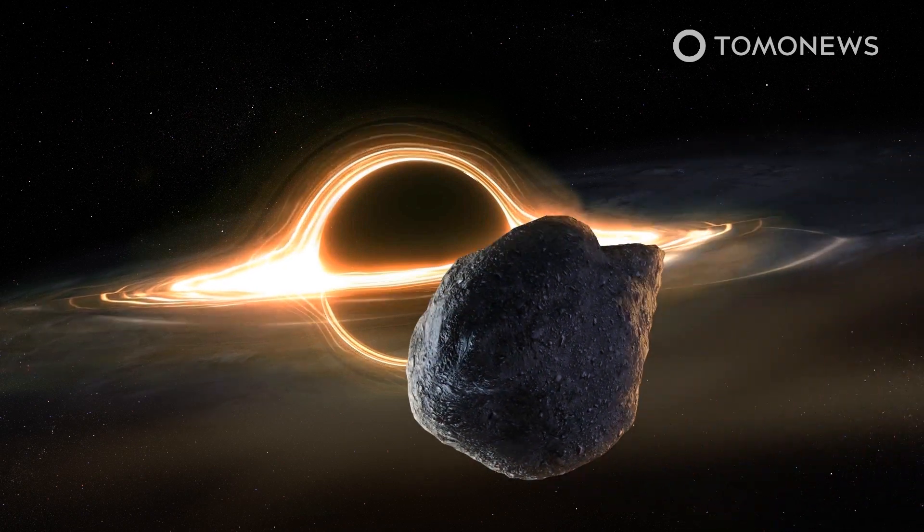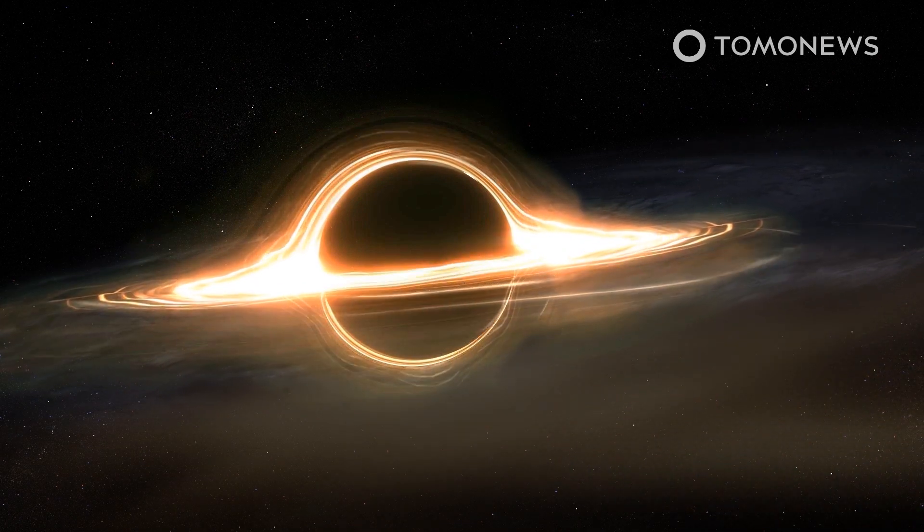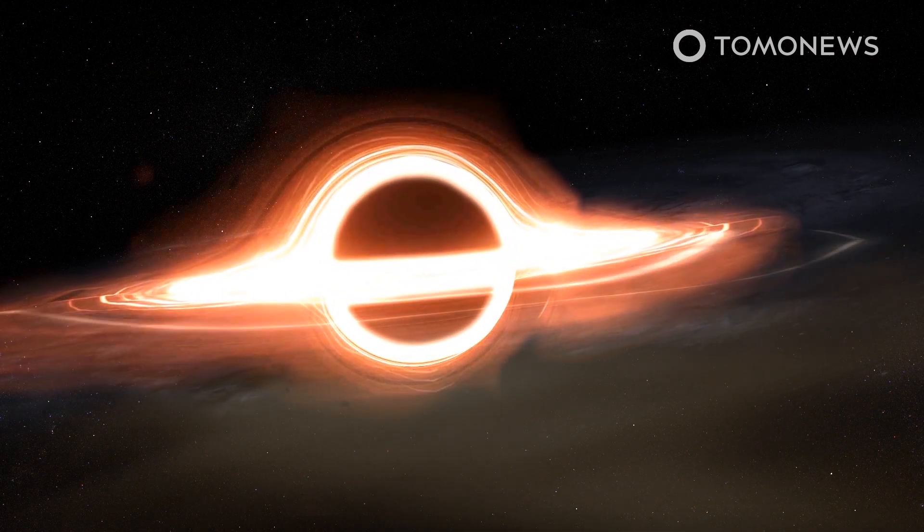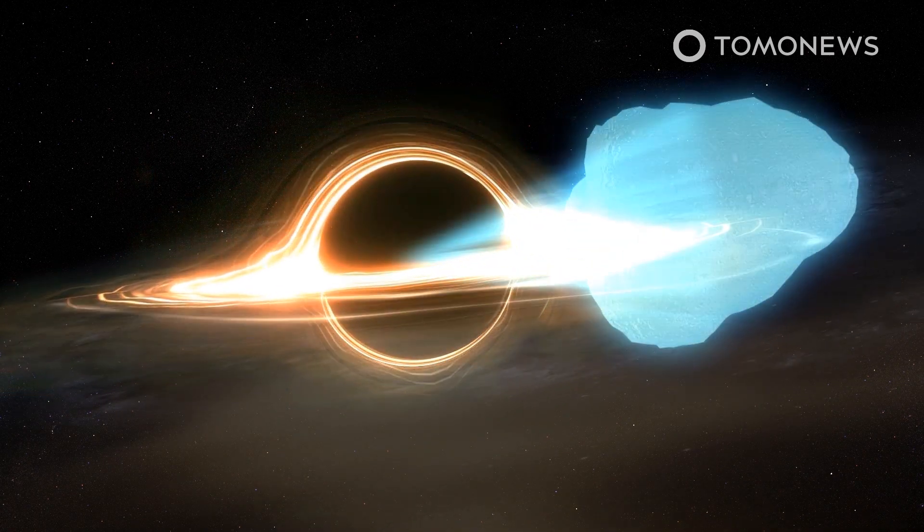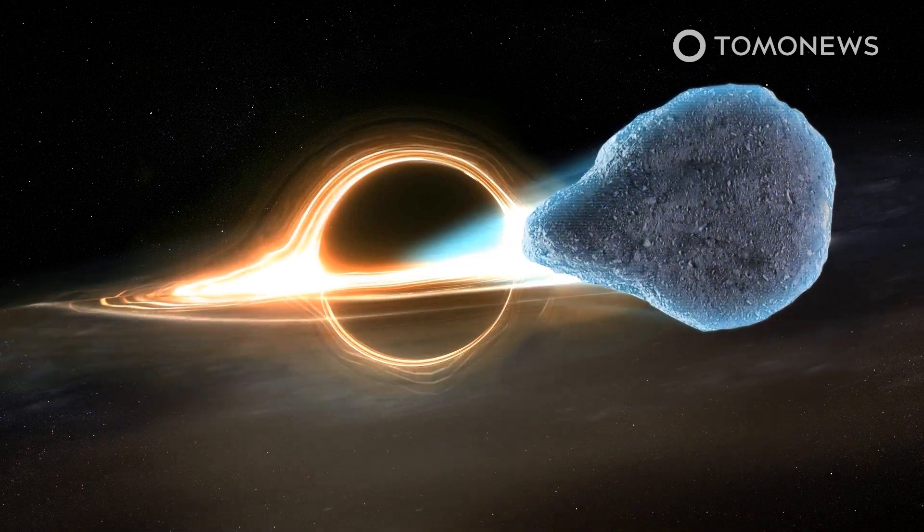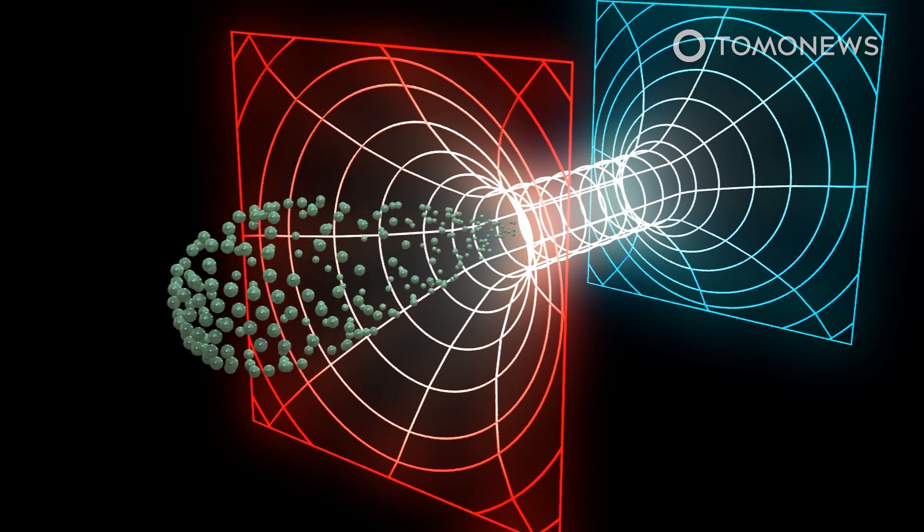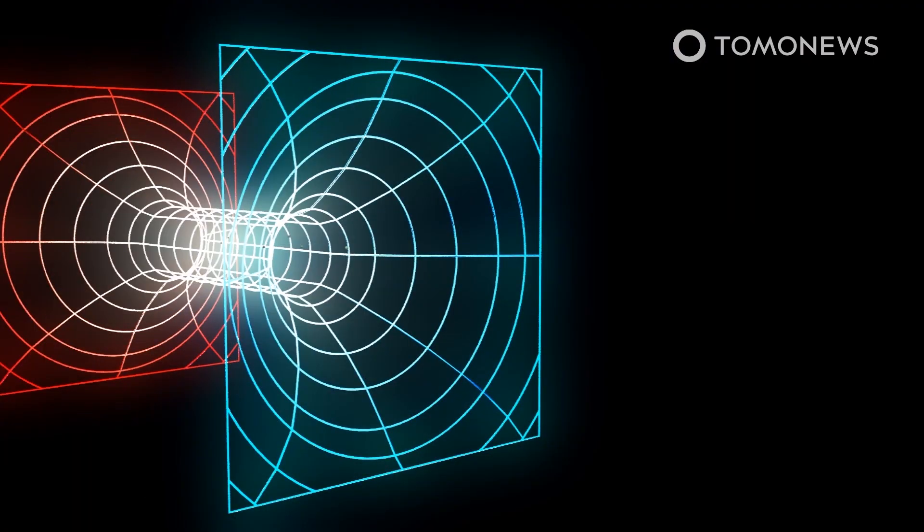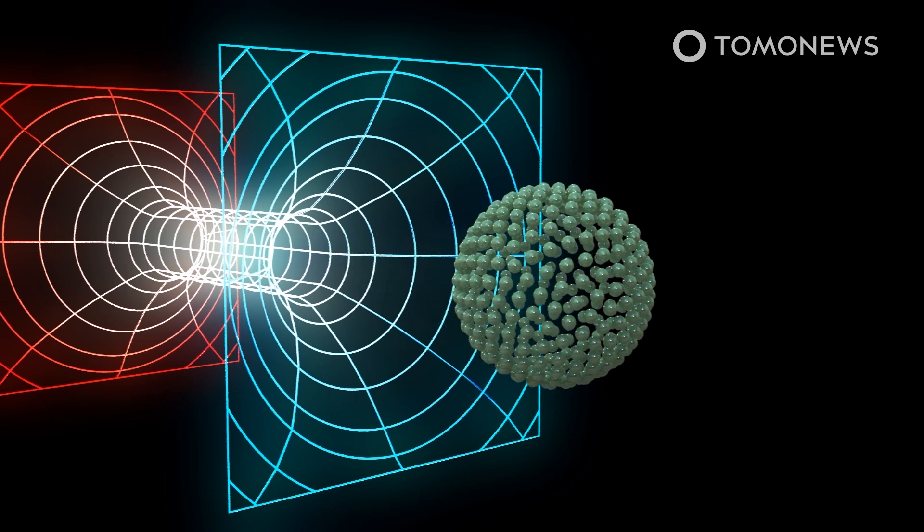Black holes were thought to totally obliterate objects they consume. However, the experiment will test a new idea in physics that evaporating black holes actually send information about subsumed objects back to the universe via Hawking radiation. Citing California Institute of Technology physicist Sophia Nazimi, the outlet reports the research team believes a black hole could be forced to disgorge intact information after it is entangled with another black hole on a quantum level.